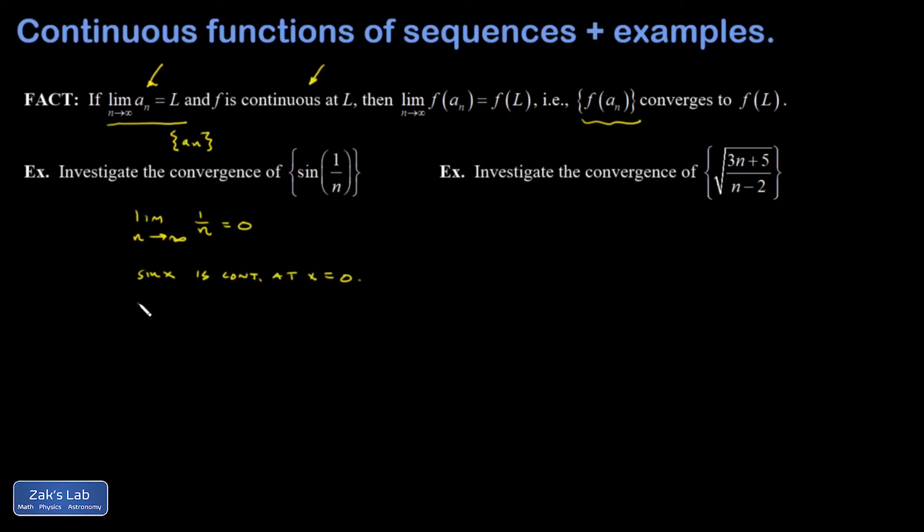Therefore, we can say the limit as n goes to infinity of f(a_n). So this is the sine of the one over n's. It's going to be equal to the sine,